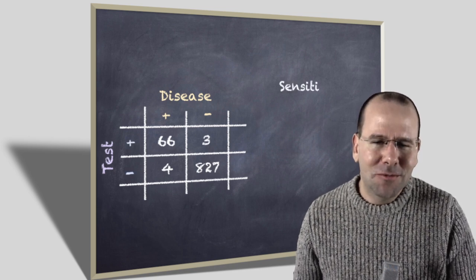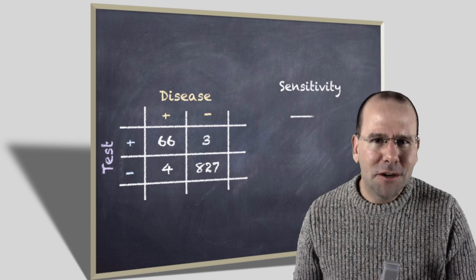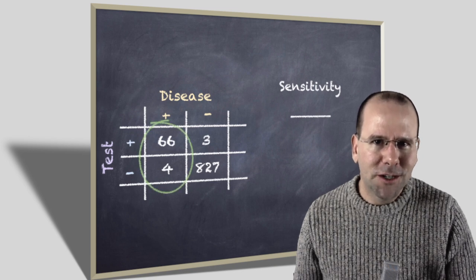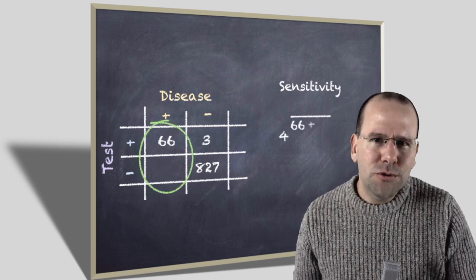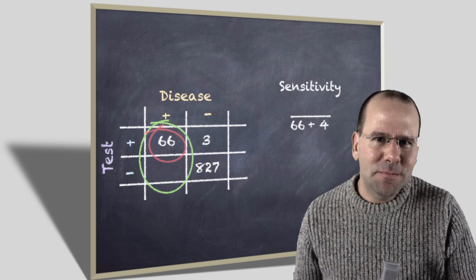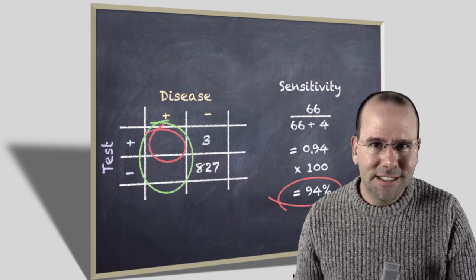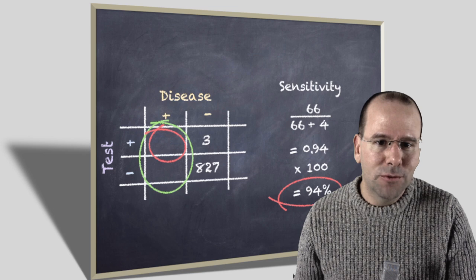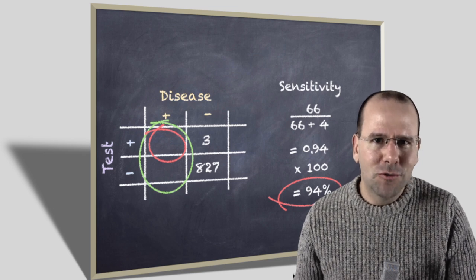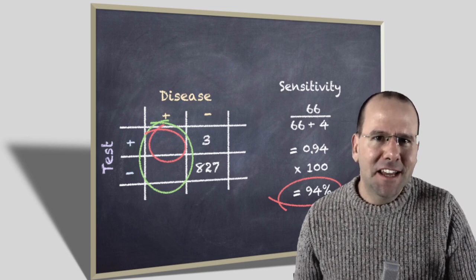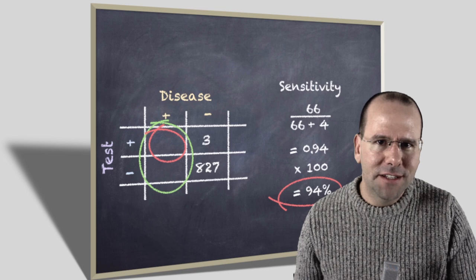So when we talk about sensitivity, we mean of all the people that are positive, the people that are circled in green, what proportion of those actually test positive? Those are the people that are circled in red. So it's a fraction, 66 over 70 gives you 0.94, times it by 100 and you've got 94%. The test will identify 94% of the people that actually have the disease.